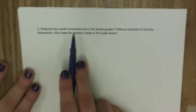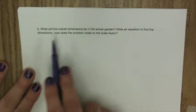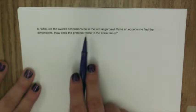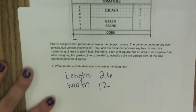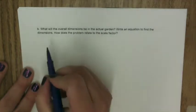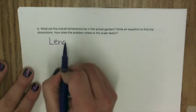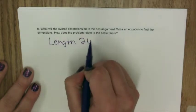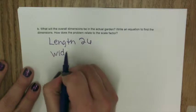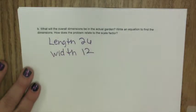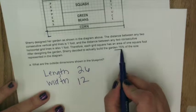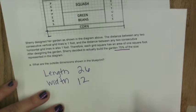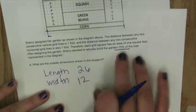What will the overall dimensions be in the actual garden? Write an equation to find the dimensions, and how does the problem relate to the scale factor? So if we go back here, we're going to copy down our length and width. But then we need to also notice that she wants to build this 75 percent of the size. So we're not going at this complete length, but only part of it.